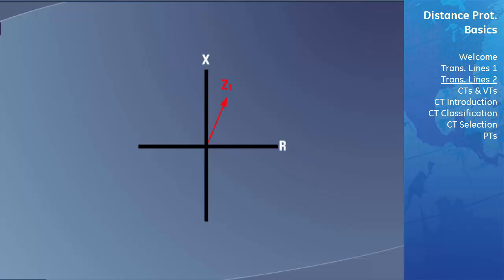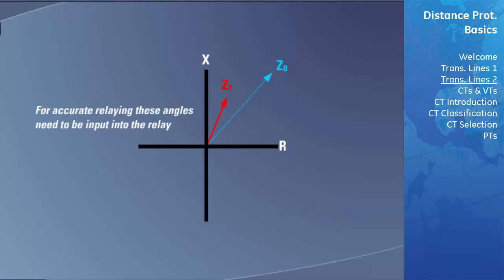Typical positive sequence line angles will be in the range of 70 to 85 degrees for lines 115 kilovolts and above. The corresponding zero sequence line angles are rarely the same as the positive sequence values due to the grounding of the line structure. For accurate relaying, these angles need to be input into the relay so it can properly model the positive and zero sequence impedances. This wasn't done for older generations of distance relays, and is why modern relays such as the D60 are much more accurate in detecting ground faults.